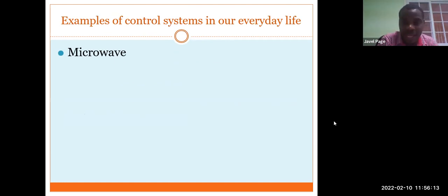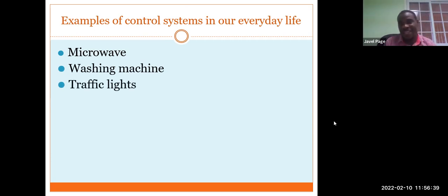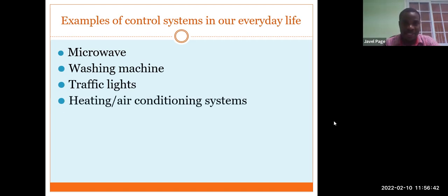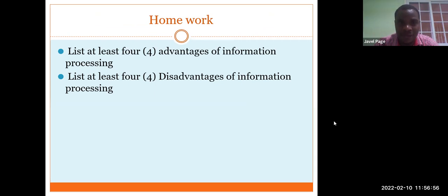A simple microwave is a type of control system — we put a cup of water in, set the time, and it heats the water for us. A washing machine is another great example of a control system we use on a daily basis. Traffic lights, as mentioned before, air conditioning systems, and alarm systems are also examples. Now here is a good homework moment: list at least four advantages of information processing and four disadvantages of information processing. You can do that on your own.